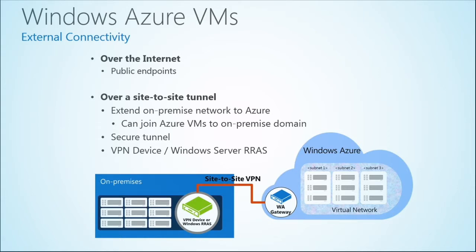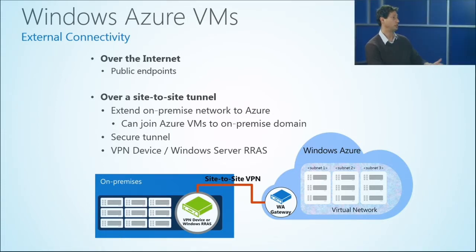Another way to connect is using a site-to-site tunnel — basically a VPN tunnel that allows you to extend your on-premise network into Windows Azure. This tunnel allows you to connect to all of those virtual machines in Windows Azure just as if they were part of your local domain. You can use your DNS server and refer to those virtual machines by name. The tunnel also allows you to join those virtual machines in Azure to your on-premise domain and extend domain policies such as password change requirements. It provides an encrypted channel between on-premise and the cloud.